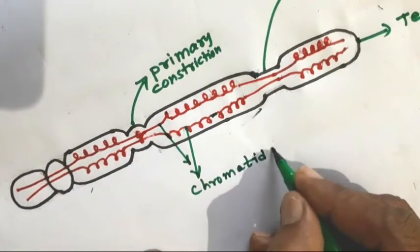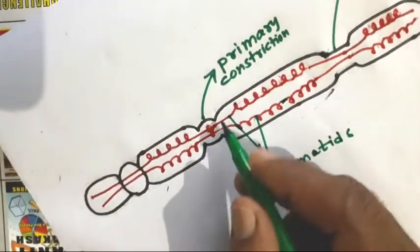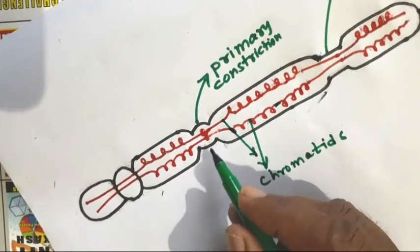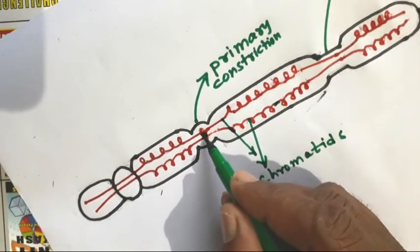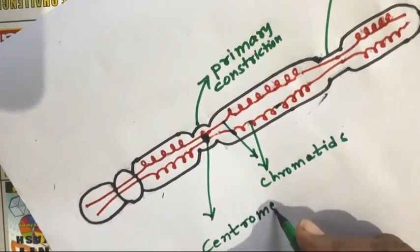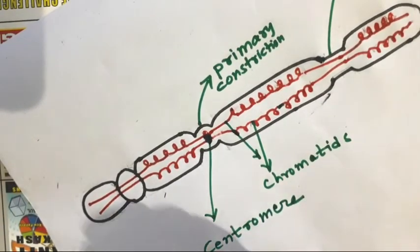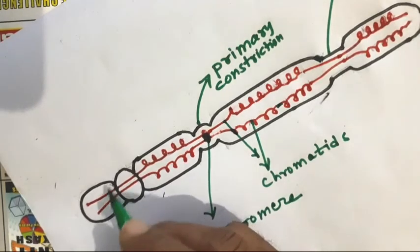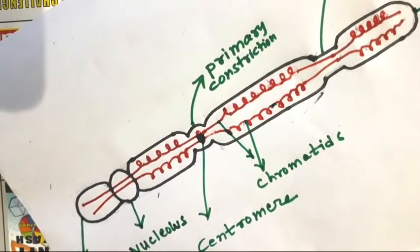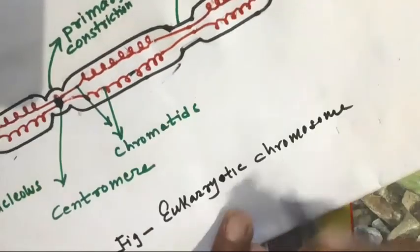You are looking at the two chromatids over here, and this is the primary constriction where the two chromatids are actually attached at a point — this point of attachment is called the centromere. And this is actually the nucleolus present, and sometimes a satellite. This is the figure of a eukaryotic chromosome.